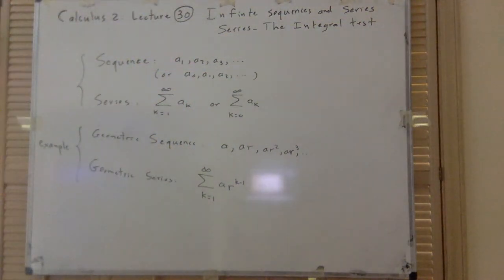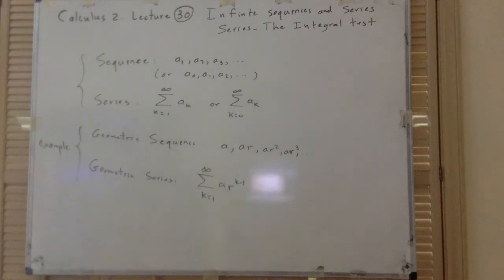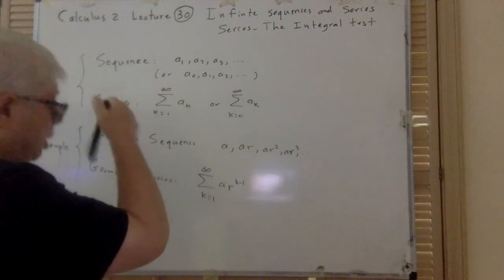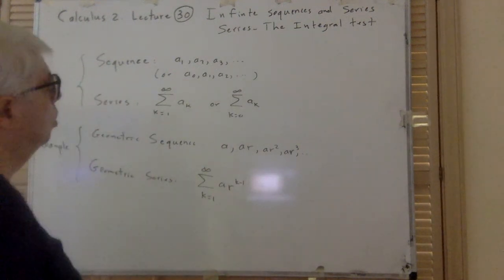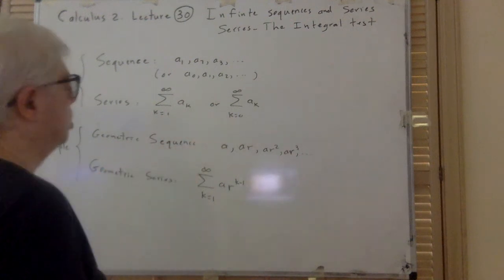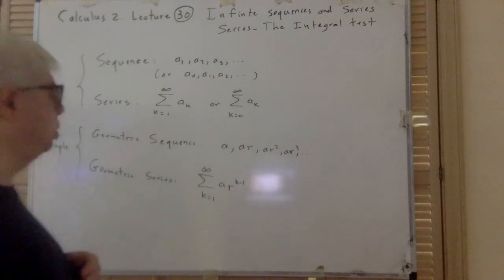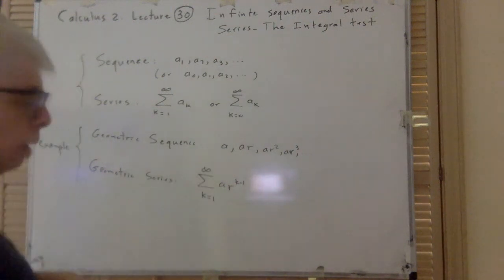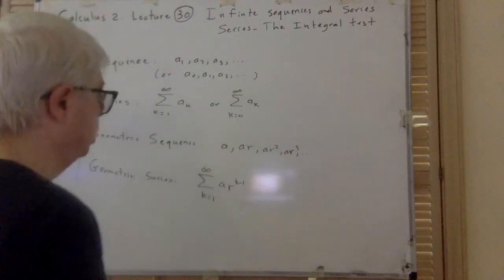This is Chapter 2 on infinite sequences and series — specifically the series and the integral test. Sequences are like a₁, a₂, ... or starting at zero: a₀, a₁, a₂, and so on. A series is the sum of terms in a sequence: sigma a_k from 1 to infinity. The geometric sequence is a, ar, ar², ... and the geometric series is just the sum of that.